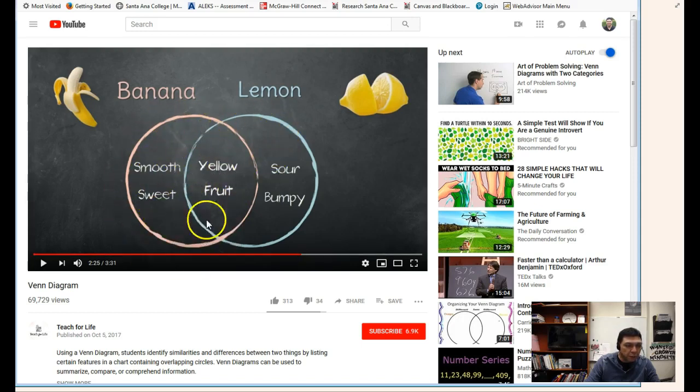So you can see the sour and bumpy would be for the lemon, smooth and sweet for the banana, but they're both yellow fruit. That's what we call the intersection - that's a good example of that.